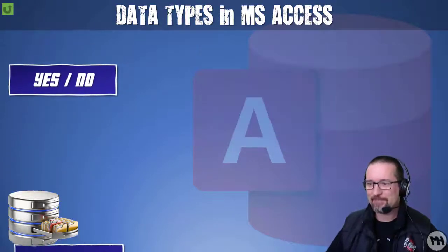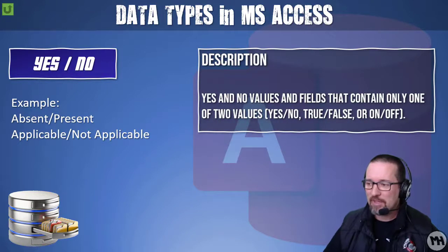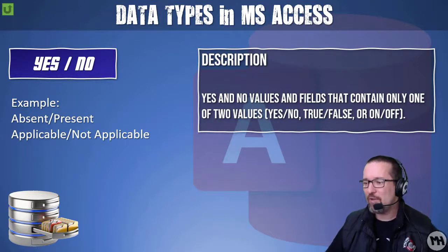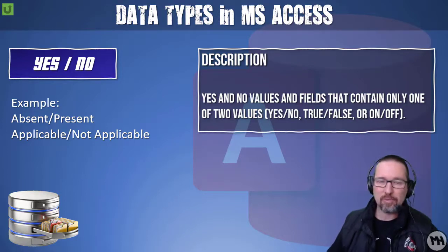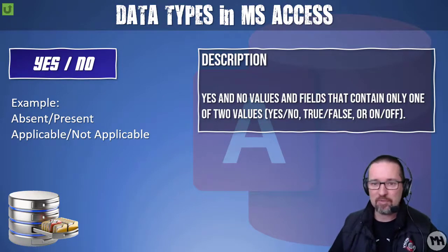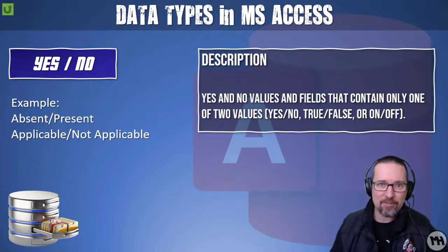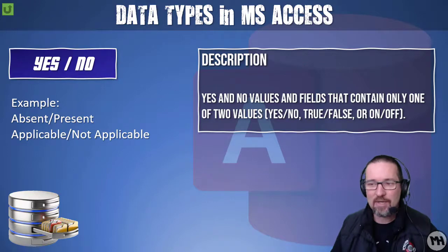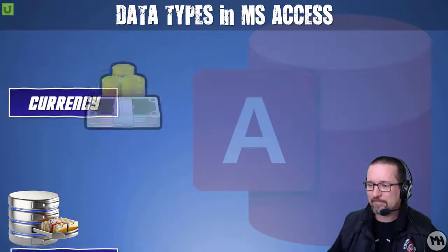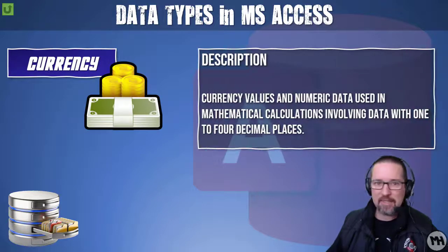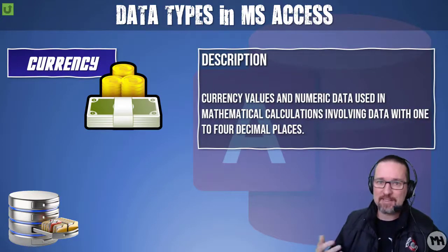A yes/no field contains only one of two values: yes or no, true or false, on or off, ones or zeros — for example, absent or present, applicable or not applicable. Either it's on or it's off, and this is normally represented by a little checkbox on the screen.